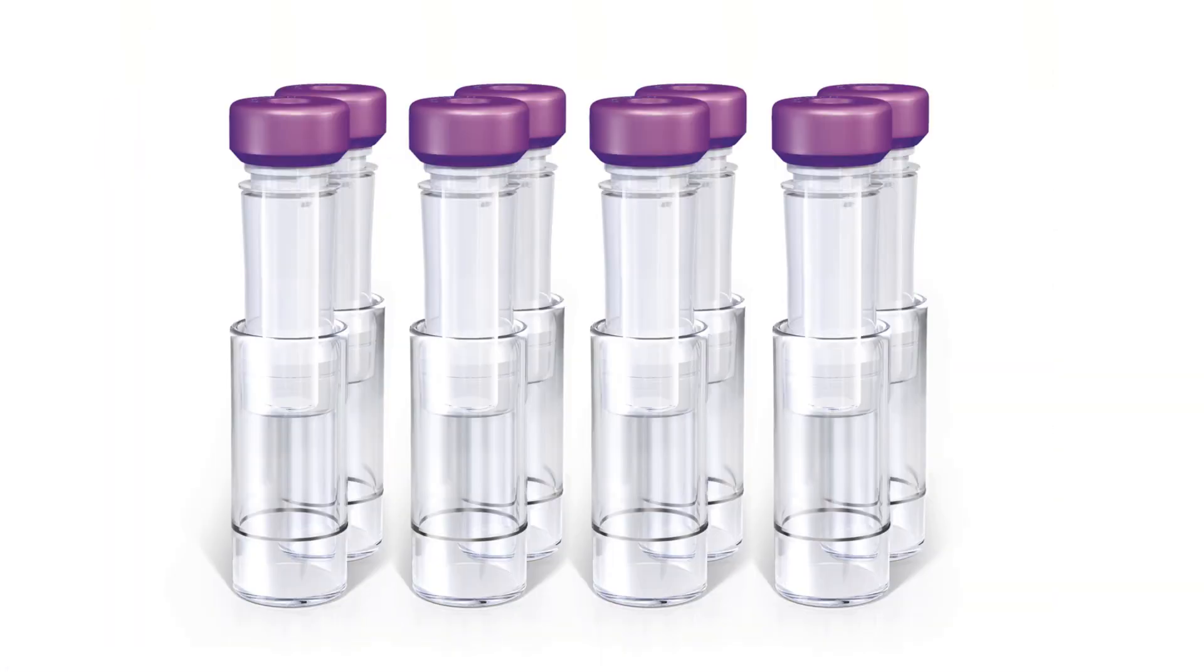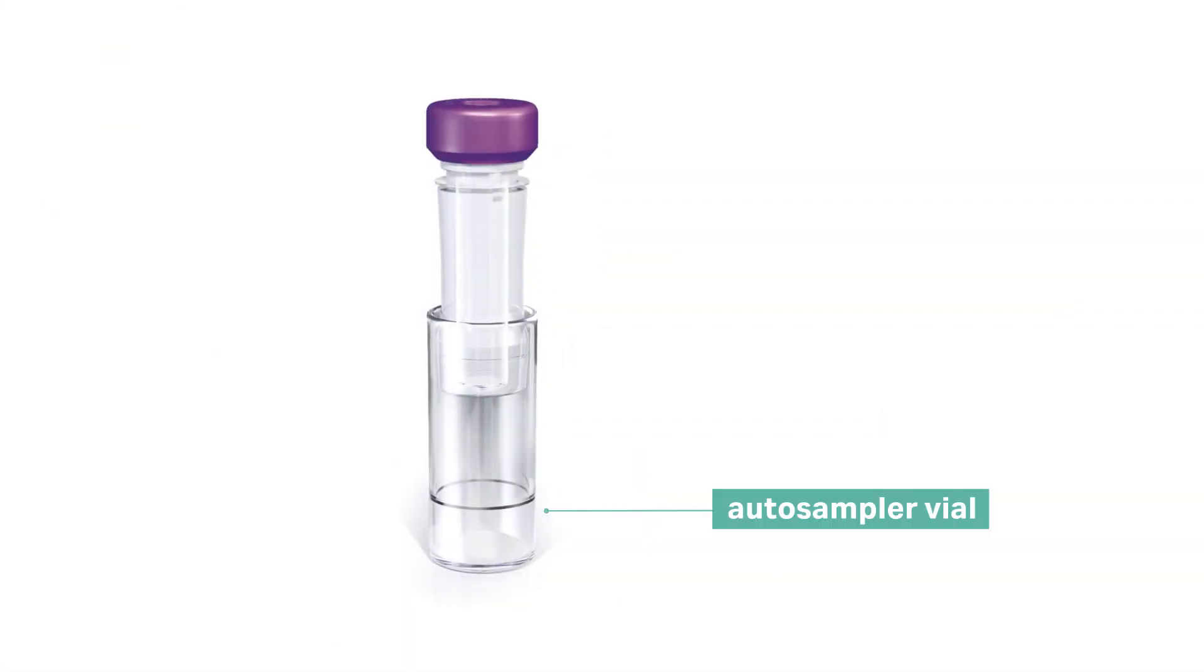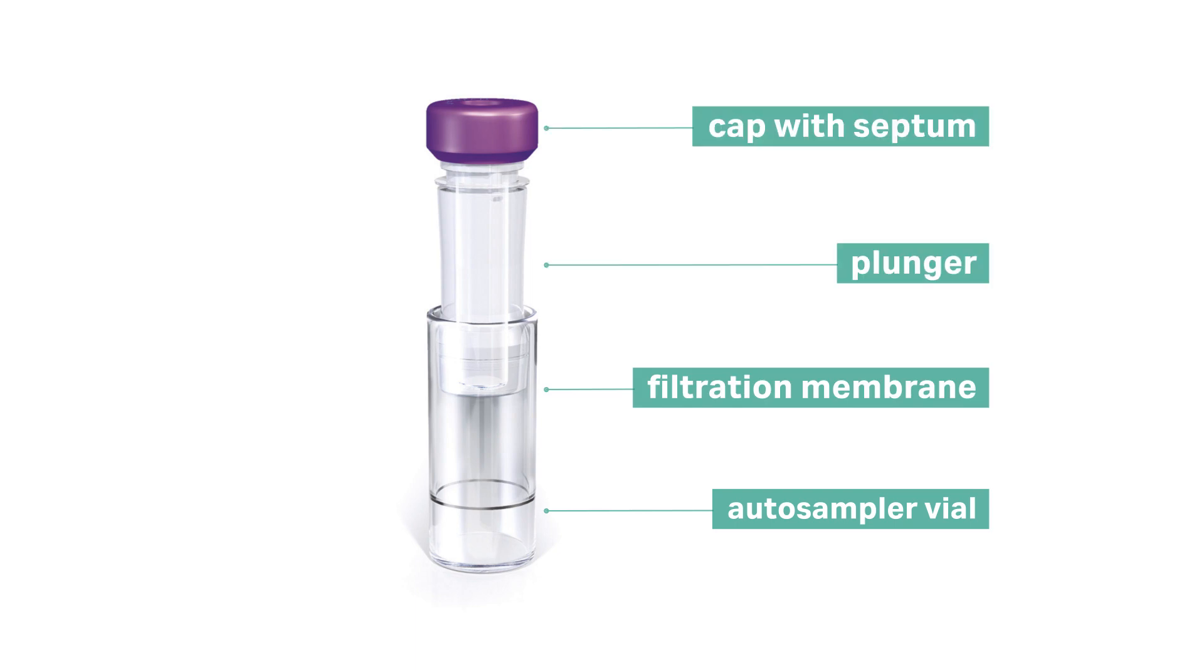Now let's filter a sample with the WhatMan Mini-Uniprep syringeless filter. The Mini-Uniprep integrates an autosampler vial, filtration membrane, plunger, and cap with septum into one consumable product. It's four products in one.